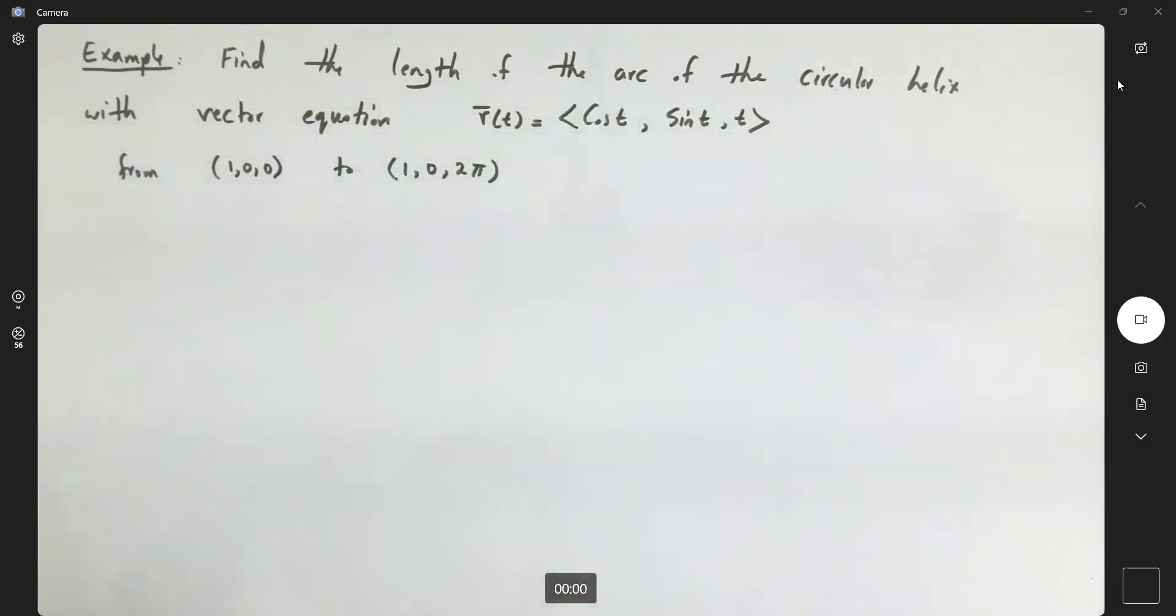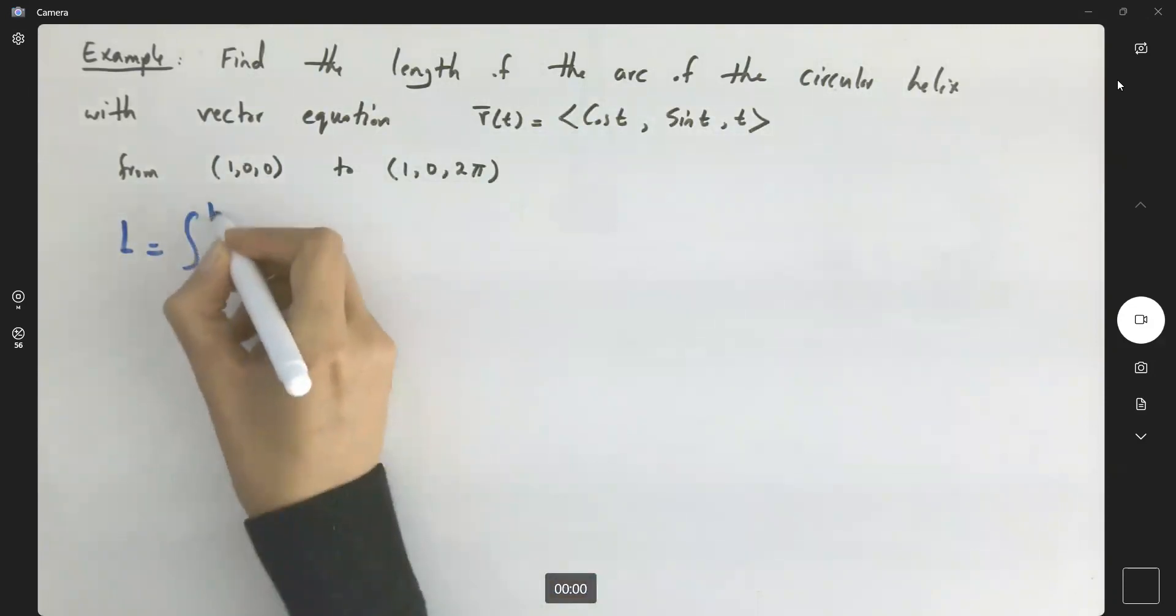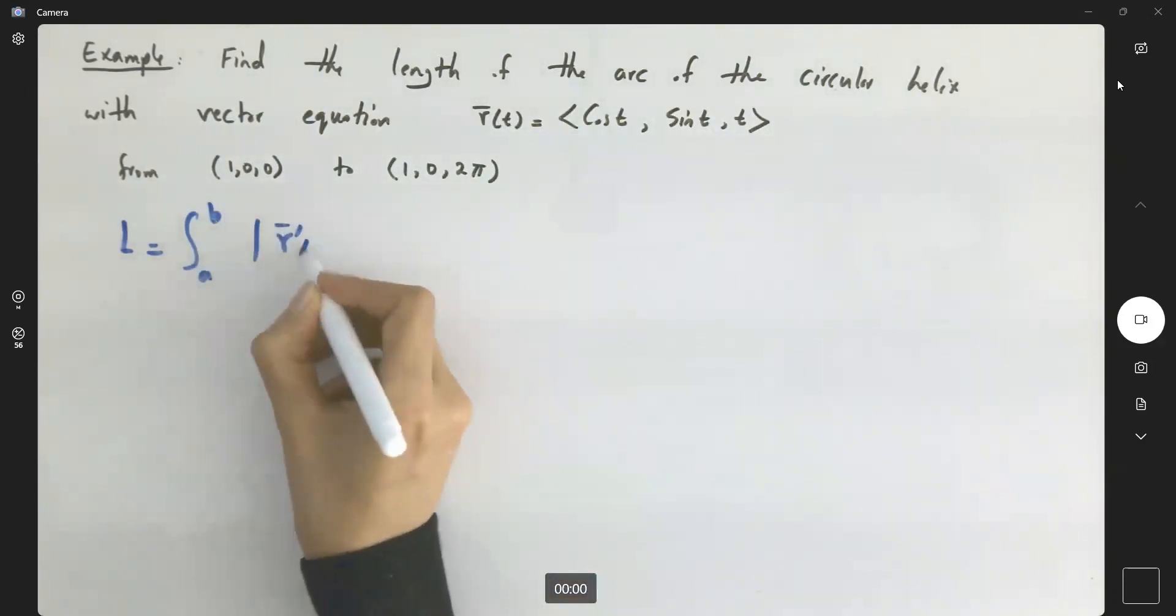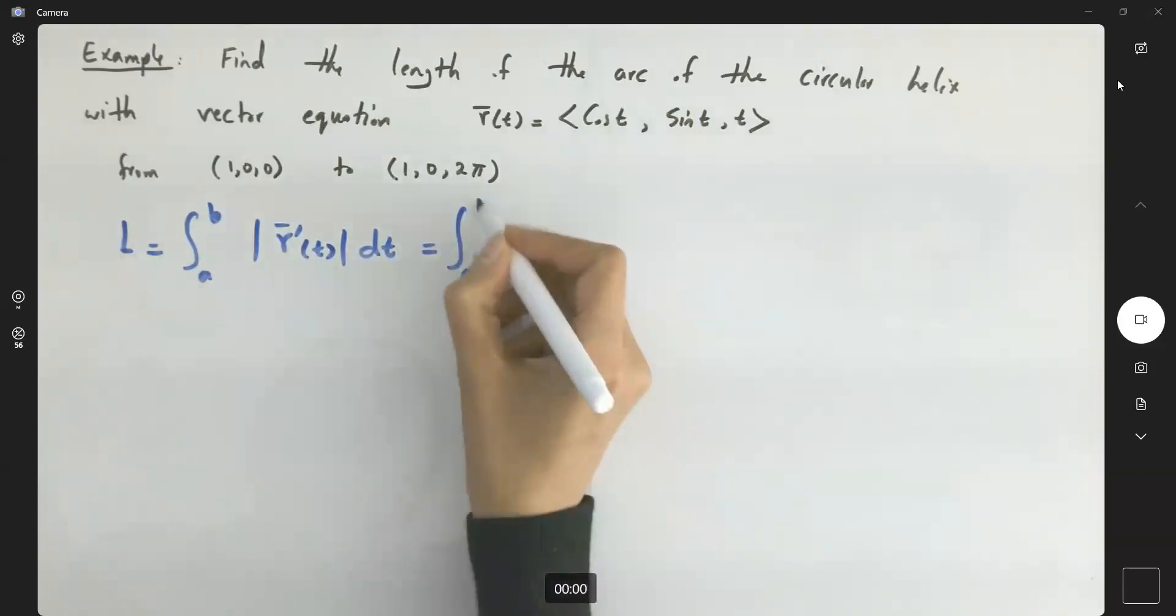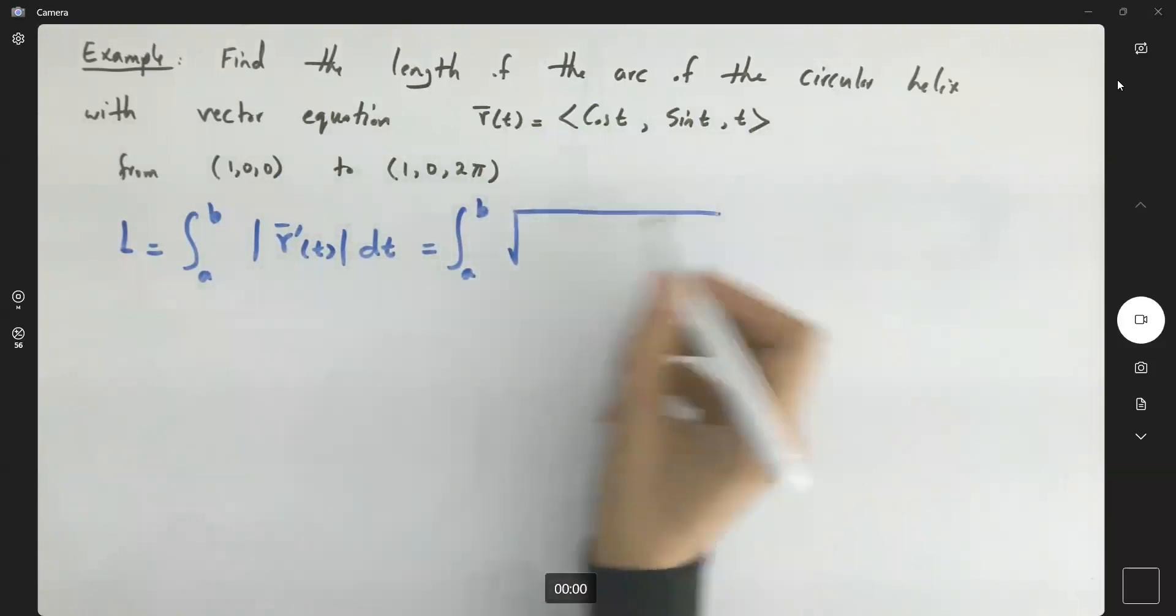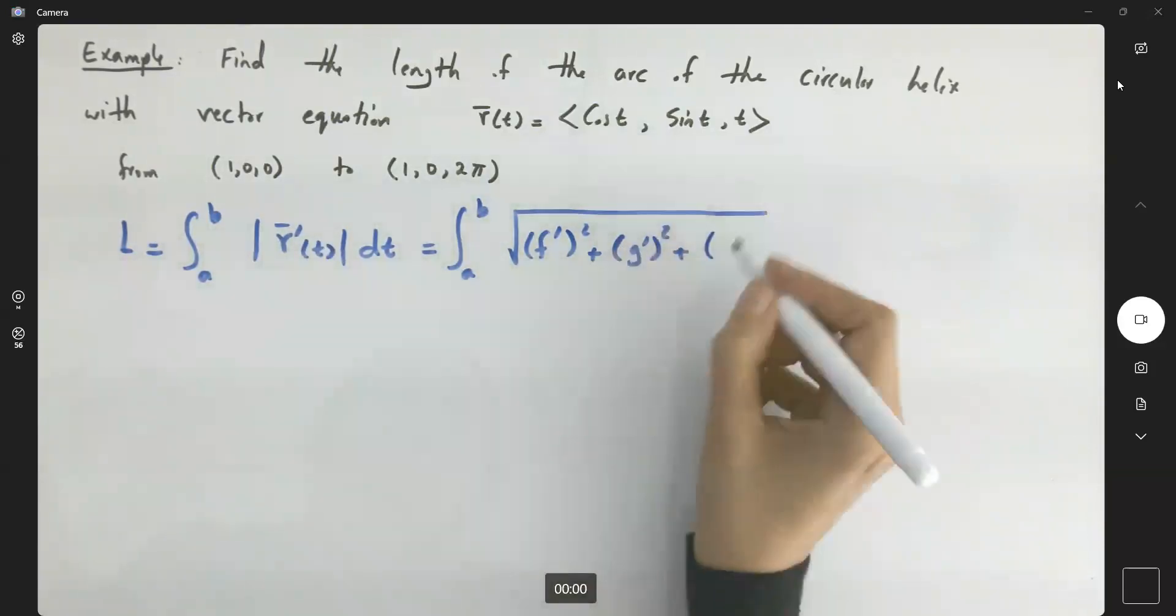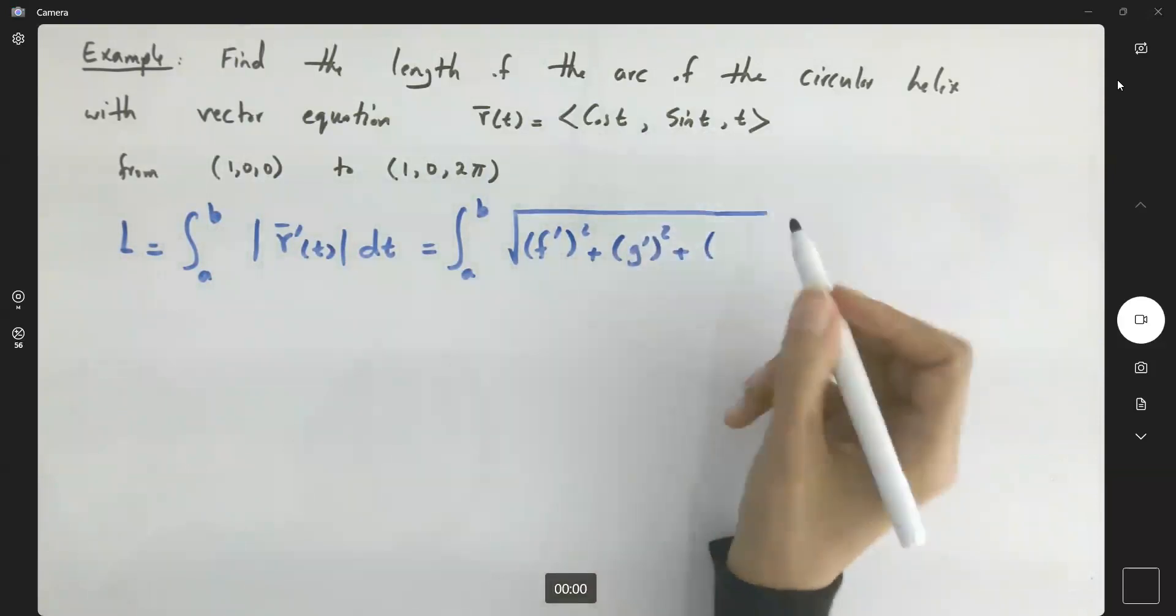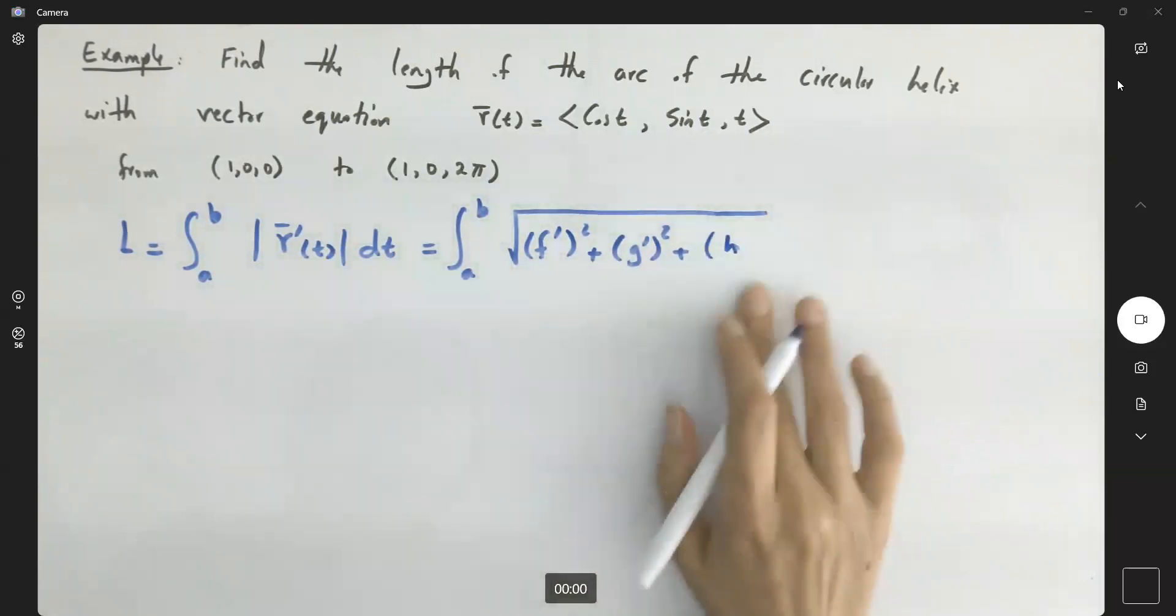We recall the formula: L is going to be the definite integral from a to b of the magnitude of r prime of t dt, which is nothing but the integral from a to b of the square root of the first component squared plus the second component squared. We're taking the derivative of r, so we take the derivative of each of these components and square them, plus h prime to the second power.